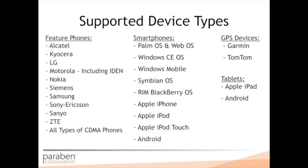Our next area is the supported device types. We have it broken down into different categories: feature phones, smartphones, GPS devices, and tablets running smartphone operating systems. All of these are supported within Device Seizure. We support over 22,000 different devices and we're constantly adding to this list. There's a variety of both logical and physical support, and the majority of them we're doing both — it's built into Device Seizure to support both logical and physical in a single tool.